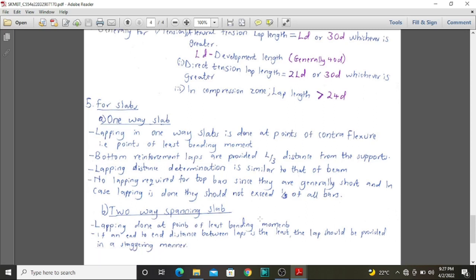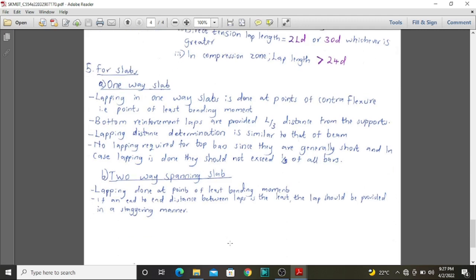It should not exceed a third of all the bars provided. For a two-way spanning slab, lapping is done at points of least bending moments. This can be determined the same way it is in beams. And if an end-to-end distance between laps is the least, then the lap should be provided in a staggering manner, as we have already explained earlier.